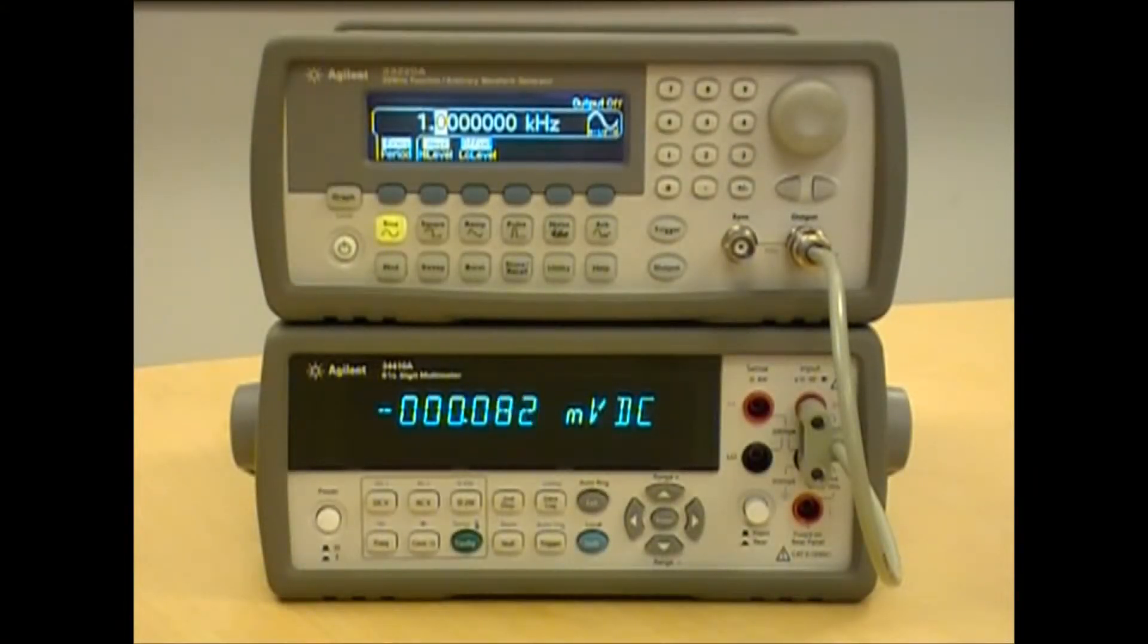Here's the setup for a simple demonstration. The top instrument is the 33220 function generator and I have its output connected to the input of a 34410A DMM. So I'll be outputting a signal on the 33220 and measuring it with the DMM.